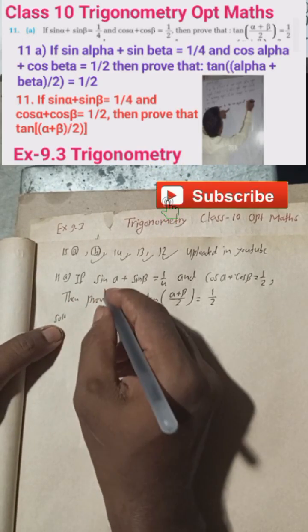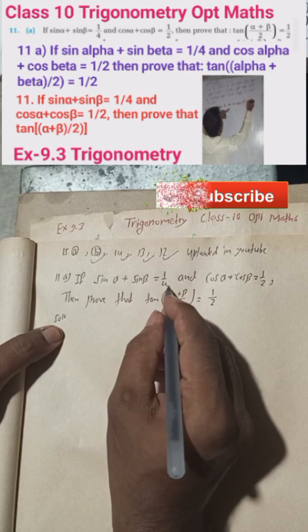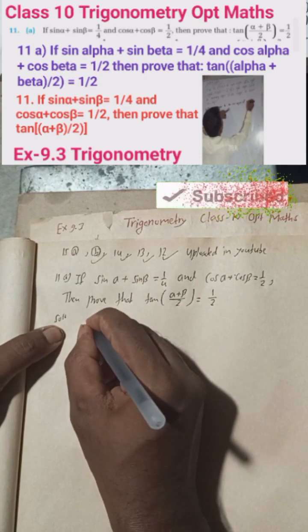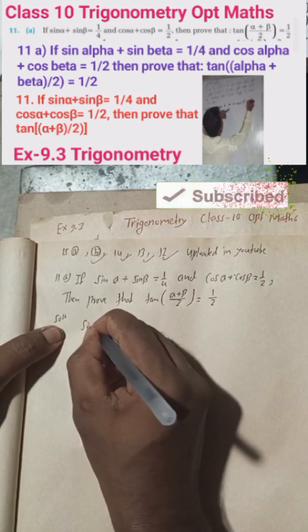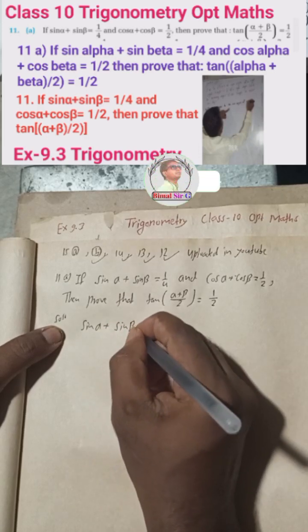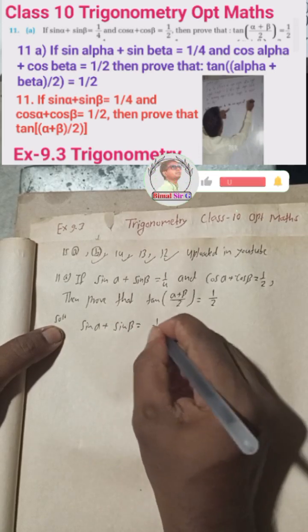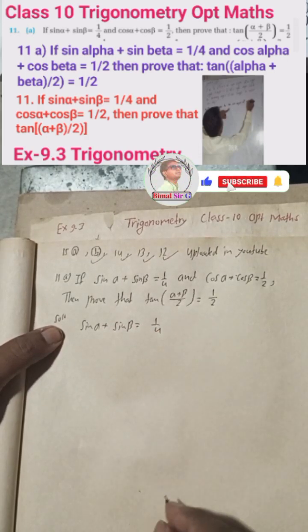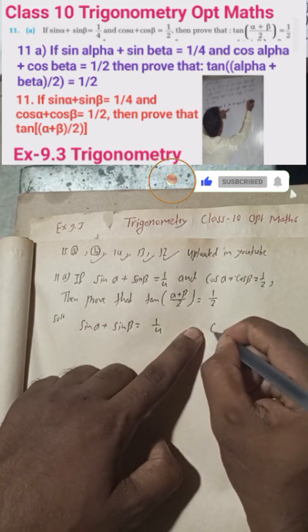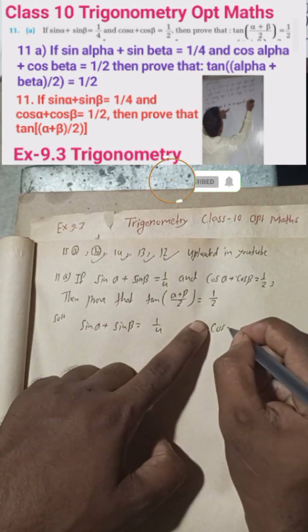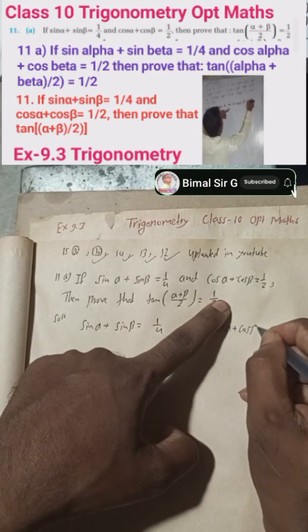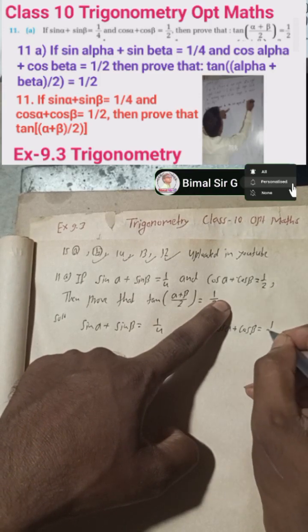The solution is given here. If sin α + sin β = 1/4, that is given as condition one. And the other given condition is cos α + cos β = 1/2.